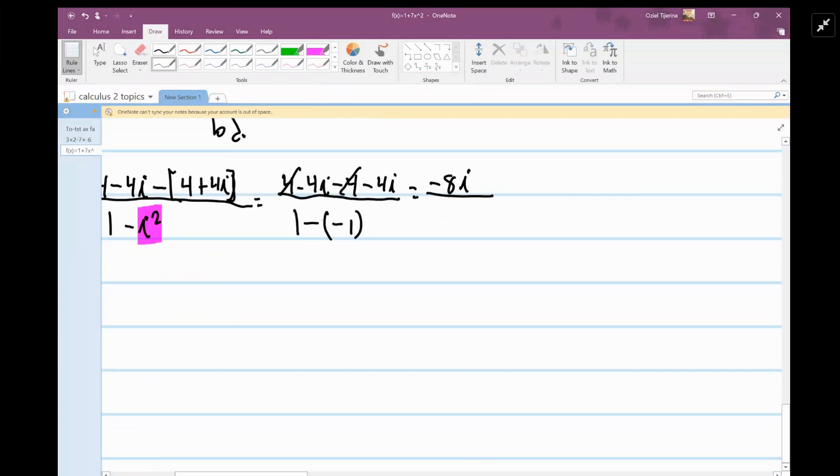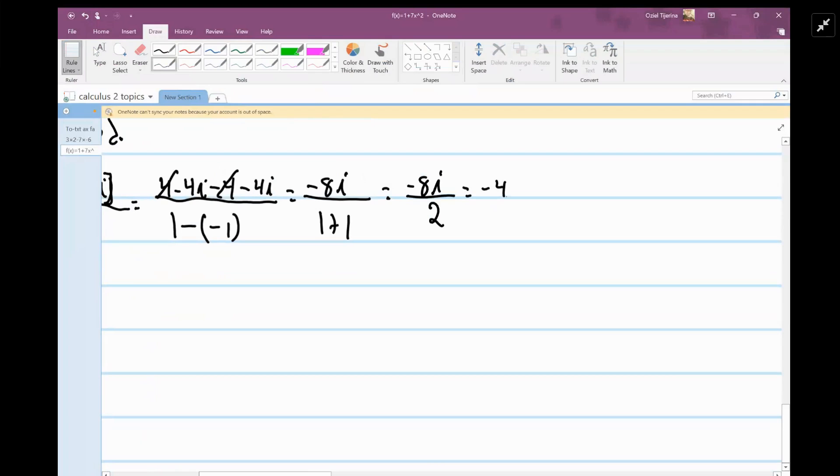So then we have negative 8i, and then we have 1 minus negative 1, that's 1 plus 1, which is equal to negative 8i over 2, which is equal to negative 4i.